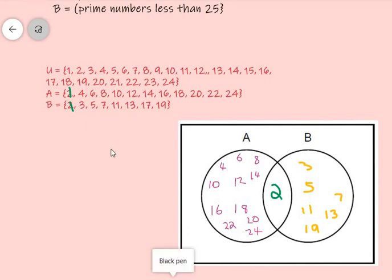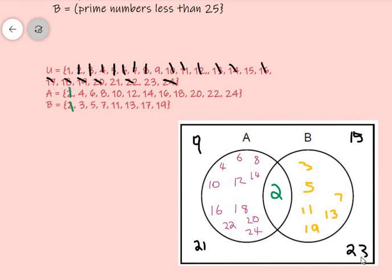So, we just crossed out all the numbers that we have. We also had seven, eight, ten, eleven, twelve, thirteen, fourteen, sixteen, seventeen, eighteen, nineteen, twenty, twenty-two, twenty-four. And what do we have left? Yeah. Very good. We only had nine, fifteen, twenty-one, and twenty-three left. And that's it.